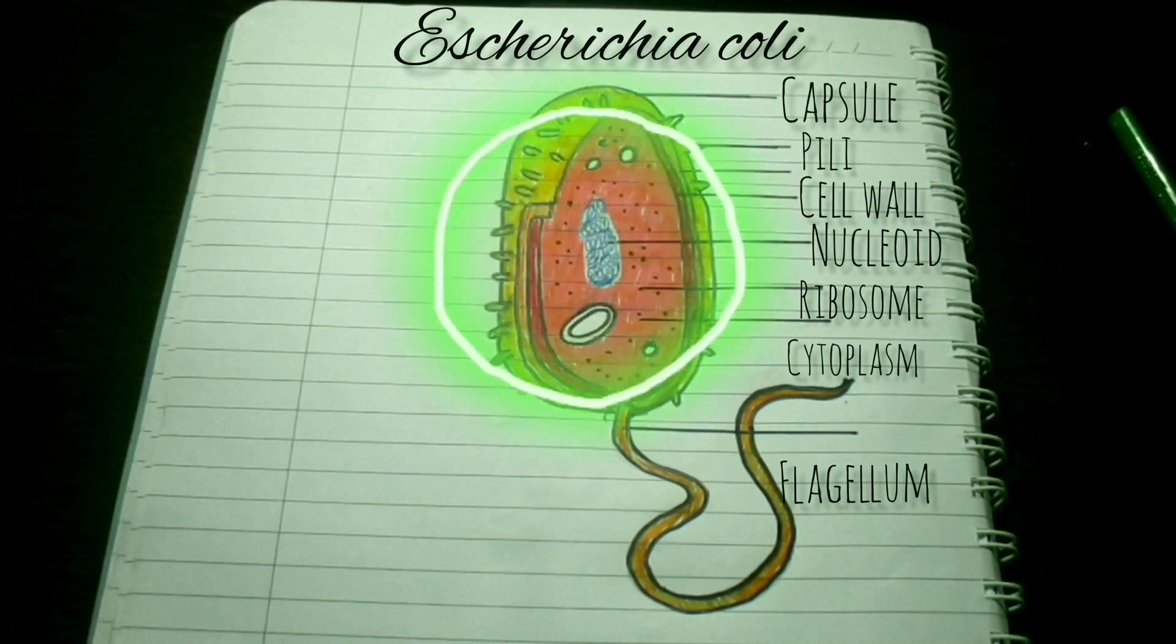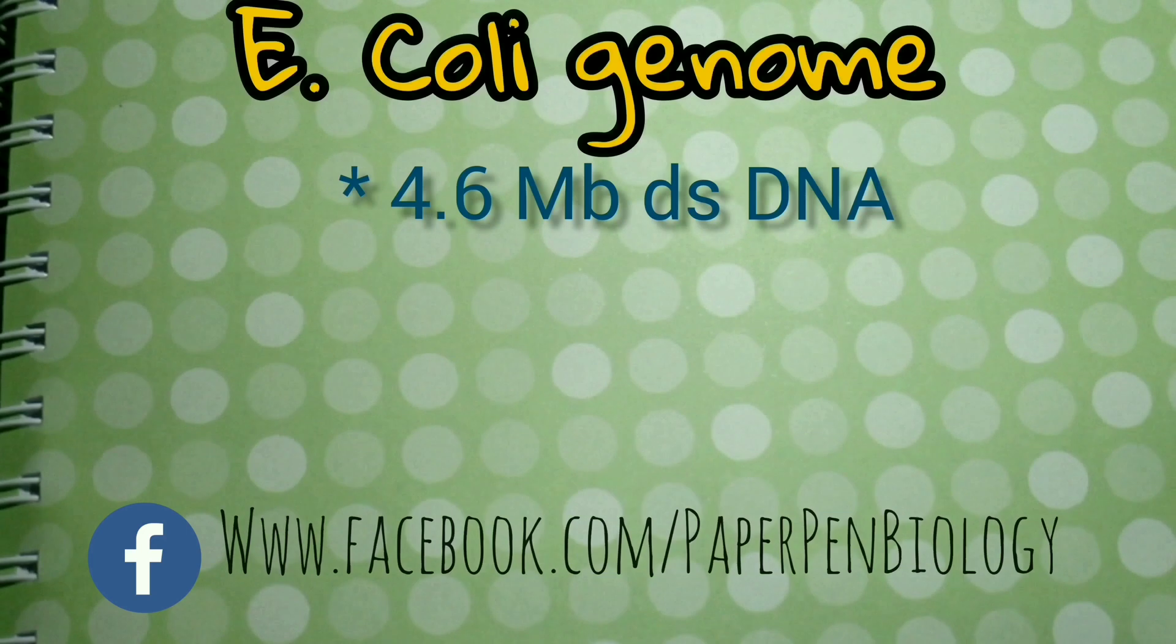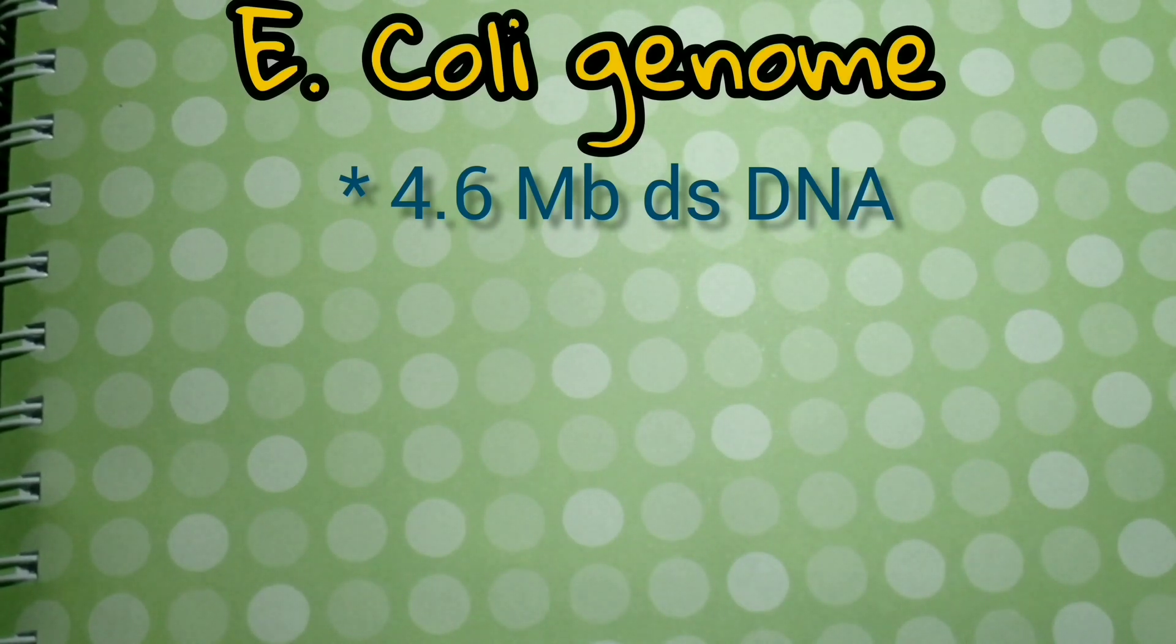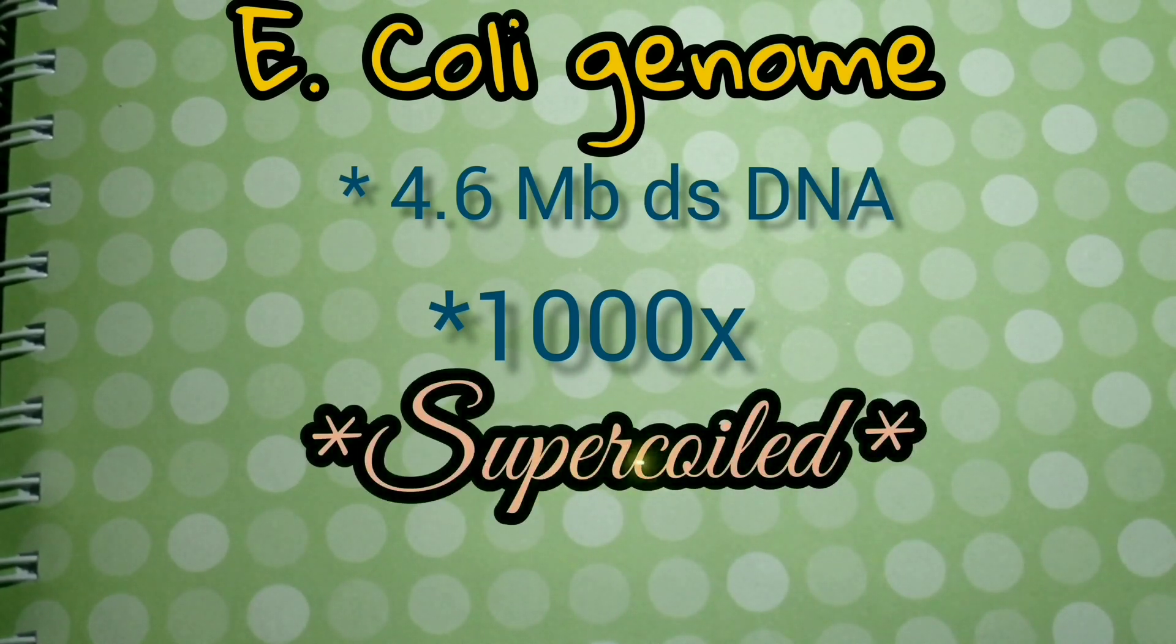Unlike the case with eukaryotic nuclei, there is no membrane between the nucleoid region and the rest of the cell. The E.coli genome consists of a single circular 4.6 MB double-stranded DNA molecule, which is approximately 1100 micrometer long.